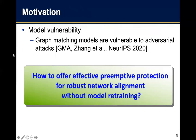A recent work has shown graph matching models are vulnerable to adversarial attacks. However, there is still a lack of robust methods investigating how to make network alignment robust to adversarial attacks.